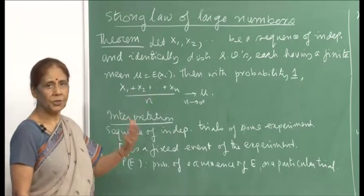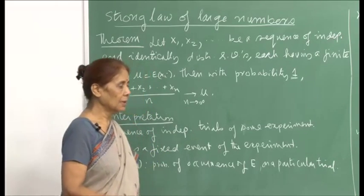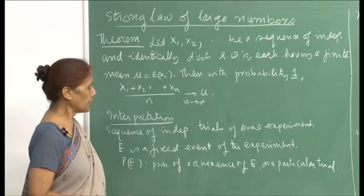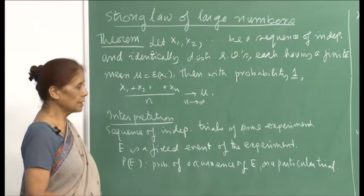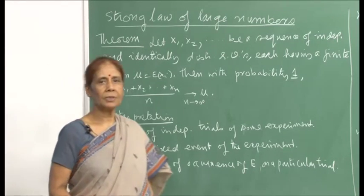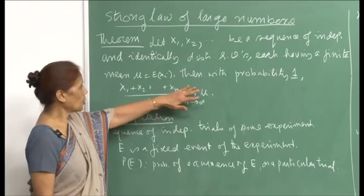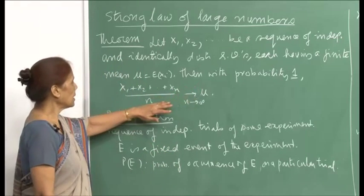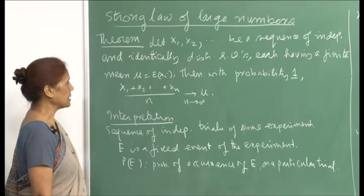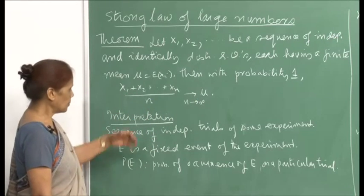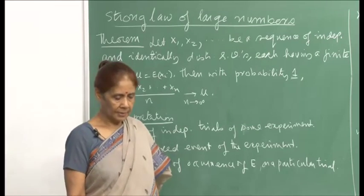This is a sure event. You can immediately see the difference between the weak law of large numbers — there it says that x̄_n converges to μ in probability — whereas here we are saying that with probability 1, x̄_n will converge to μ. This is a sure event, provided the expectation of each x_i is finite.